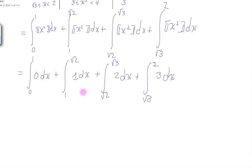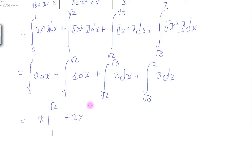The first term equals 0. Then we have x evaluated from 1 to square root of 2, plus 2x evaluated from square root of 2 to square root of 3, plus 3x evaluated from square root of 3 to 2.